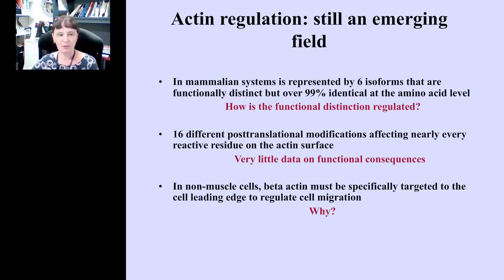In this picture taken from a recent review by Pollard and Boris, a number of proteins mediate this actin cytoskeleton activity. All these events are precisely coordinated through the functions of many actin-associated proteins. While this area of actin regulation has been studied very extensively, actin regulation in general still remains a very much emerging field. In particular, there are several mysteries related to the regulation of actin itself without the activity of associated proteins. One mystery concerns actin isoforms — in mammalian systems, actin is represented by six different isoforms that are very functionally distinct but over 99% identical at the amino acid level.